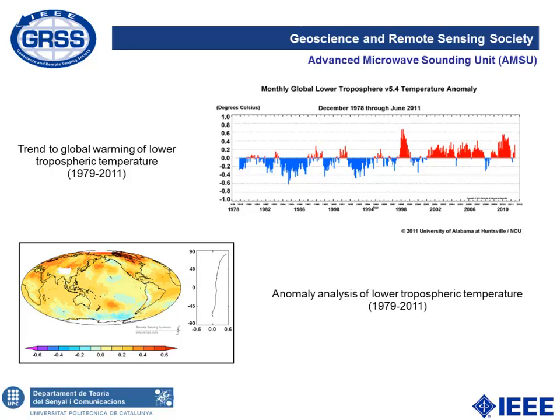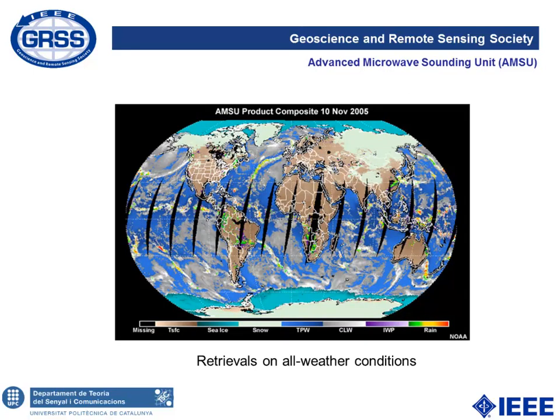There is also vertical 3D information from AMSU. Many products can be derived from this sensor, and there is a composite of all products from one-day observations: rain, integrated water vapor, cloud liquid water, total precipitable water, snow, sea ice and temperature. There are only a few missing spots due to one-day coverage, which is solved within two to three days. Being polar-orbiting, these sensors can also monitor sea ice and study the cryosphere and polar regions.